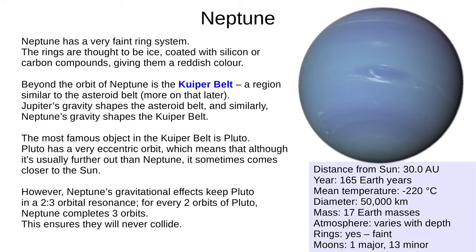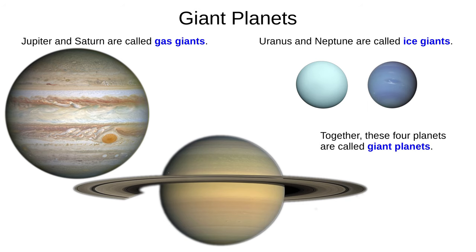The most famous Kuiper belt resident is Pluto, which has a very eccentric orbit. While it usually stays further from the Sun than Neptune, it occasionally comes closer — however, Neptune's gravity keeps Pluto in a 2-3 orbital resonance, so for every three orbits of Neptune, Pluto completes two, ensuring they will never collide. Jupiter and Saturn are called gas giants; Uranus and Neptune are called ice giants; and together these four planets are called giant planets.